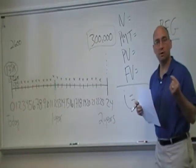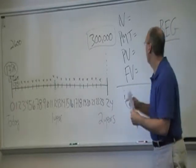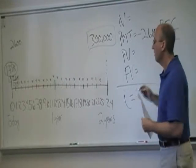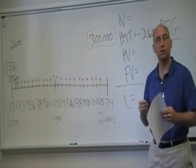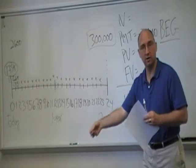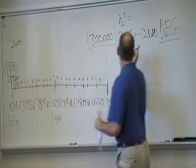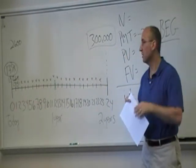The reason we're going to put it in begin mode is because when we tell it that our payment is negative $2,600, because every month Tora is going to be paying in $2,600, the first one happens at time zero and that's what the begin mode tells the calculator.